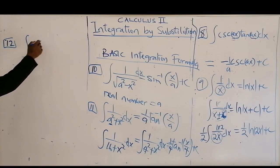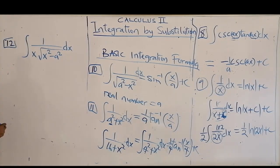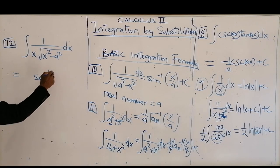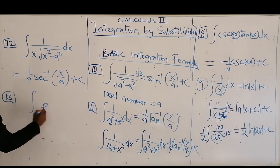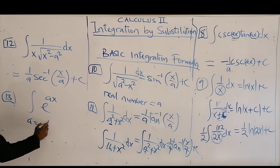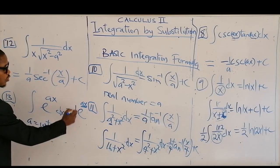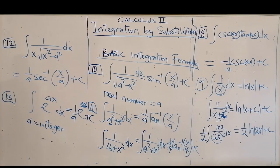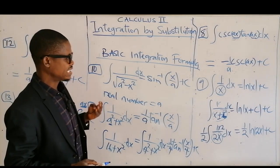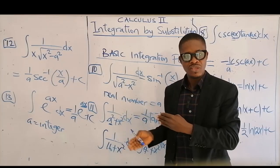Another one, which is almost similar, is the integral of 1 over (x² minus a²) dx. This gives you 1 over a times arcsec(x/a) plus c. Then the next one is the integral of an exponential function e to the power ax, where a is an integer — it could be positive or negative. Any time you have an exponential, the integral is the same exponential, but you must divide by the derivative of the power, giving you 1 over a times e^(ax) plus c. So that covers the basic integration formulas — familiarize yourself with these to make integration easy.